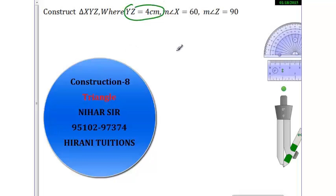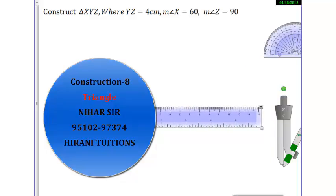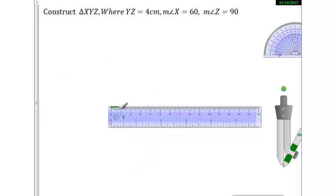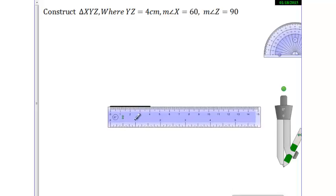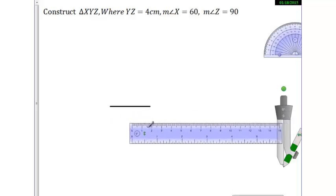So hum sub se pehle YZ banayenge or uska measure banayenge 4 centimeter. Let's take a scale and draw a line of 4 centimeter. It's a little bit bigger, let me draw it correctly. You also draw the lines correctly with sharpened pencil. The pencil should be sharp, otherwise the construction won't be perfect. I think it's 4 now. Let me put the scale correctly, it's 4 or maybe 4.1, not more than that, so it's fine.